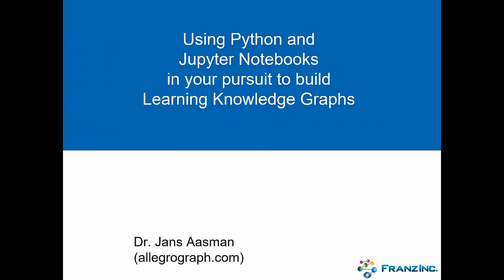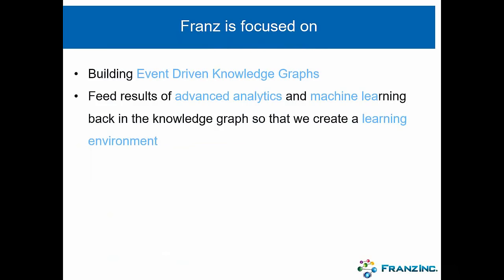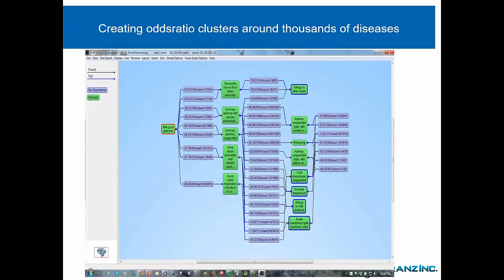The topic for today is using Python and Jupyter notebooks to help you build your own learning knowledge graphs. About a week ago I talked about how we at Franz have built, together with several large companies, event-driven knowledge graphs. One of the interesting features of our knowledge graphs is that we take the output of advanced analytics and machine learning and put the results back as triples in the knowledge graph, so we ultimately create a learning environment.